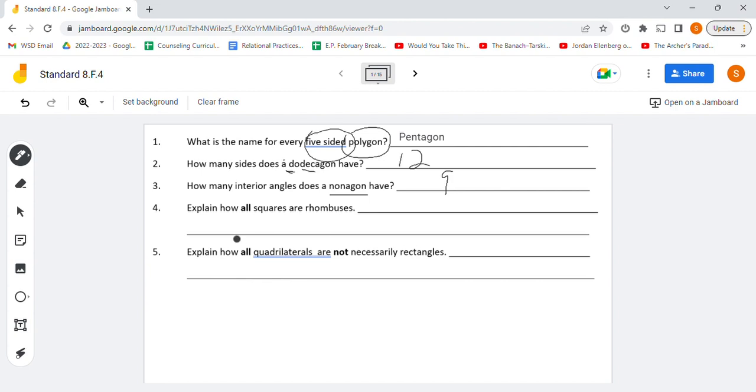Explain how all squares are rhombuses. The definition of a rhombus is that it has all four sides that are congruent to each other, and squares fit that definition. So we would say all four sides are congruent.